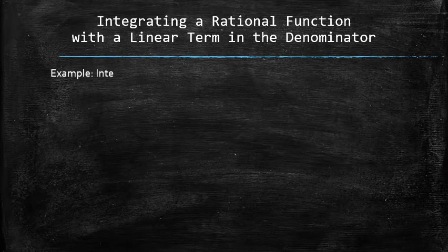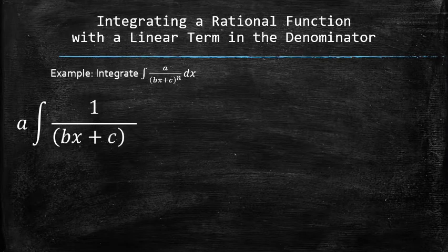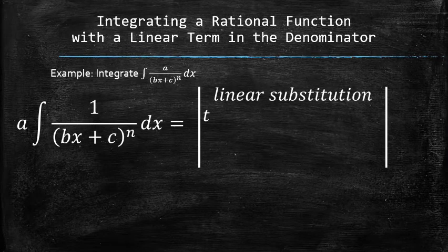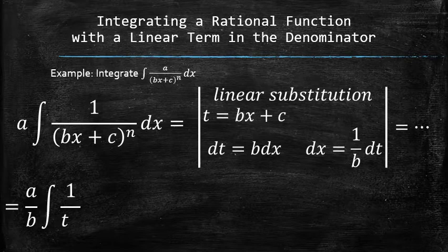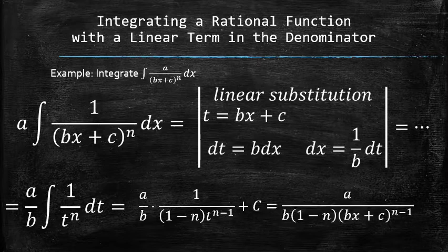Let's consider a rational function with a linear term in the denominator raised to some power n. We factor out the constant a right away and set up the linear substitution by setting t equal to bx plus c, finding the differential of t, and expressing dx in terms of dt. As a result, we have a simple indefinite integral in terms of t. We continue with the integration process by finding the antiderivative and replacing t with the original expression.